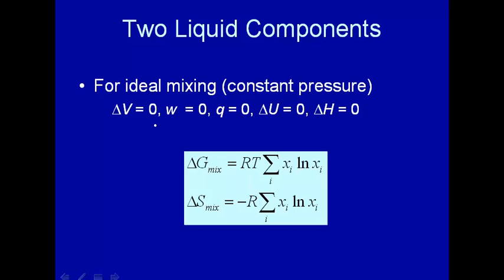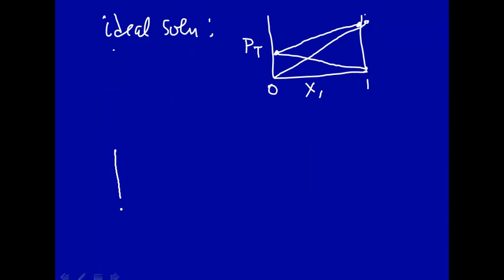There are a few other consequences of having an ideal solution. For instance, the change in volume when the two solutions are mixed should be 0. Let's look at that in more detail.